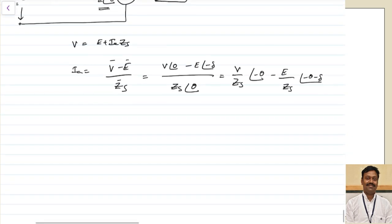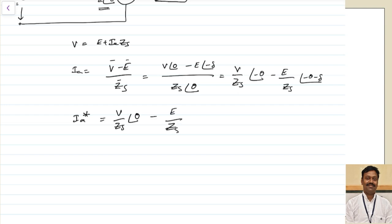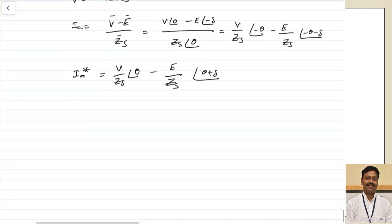To calculate complex power, we take the current conjugate. The reason for using the conjugate is covered in basic electrical engineering — a link is provided for reference. Taking the conjugate, the angles reverse: (V/Zs)∠θ and (E/Zs)∠(θ + δ).